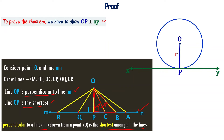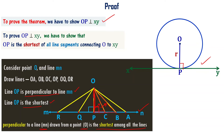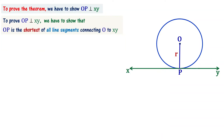To prove the theorem, we have to show that OP is perpendicular to XY. We have to show that OP is the shortest of all line segments connecting O to XY. If OP is the shortest of all line segments connecting O to XY, automatically OP is the perpendicular line. That is what we have learnt here — OP is perpendicular to XY, and that is the proof.